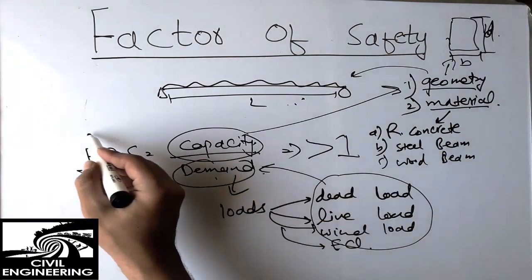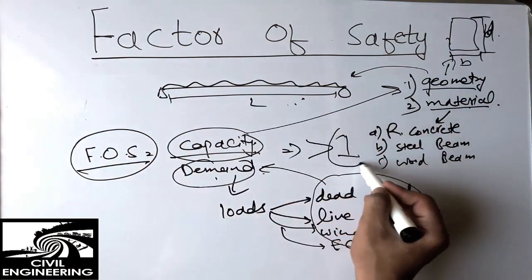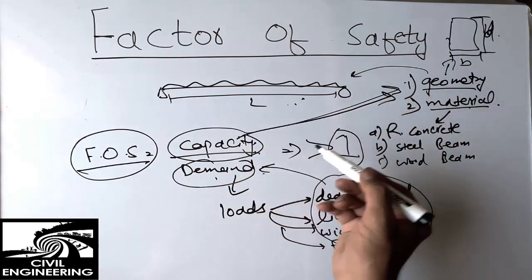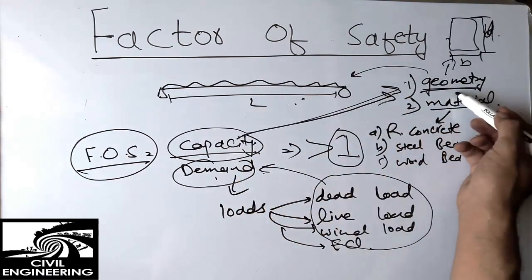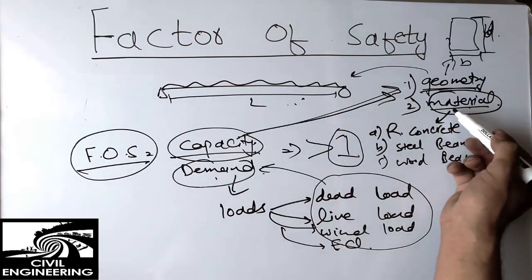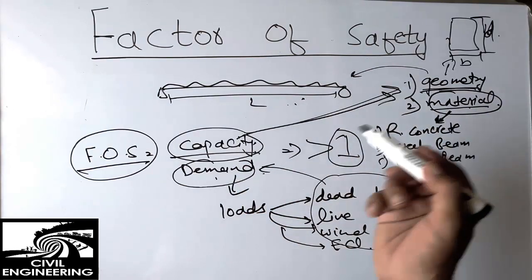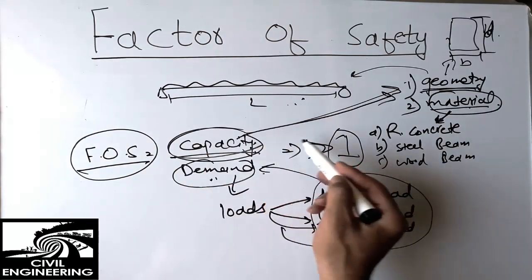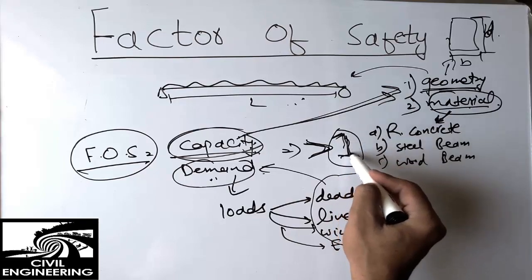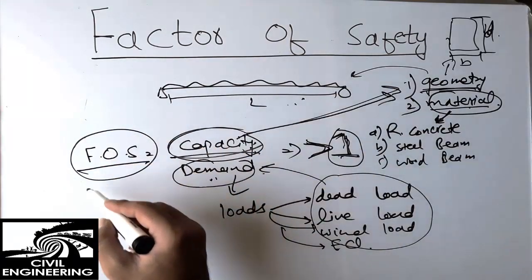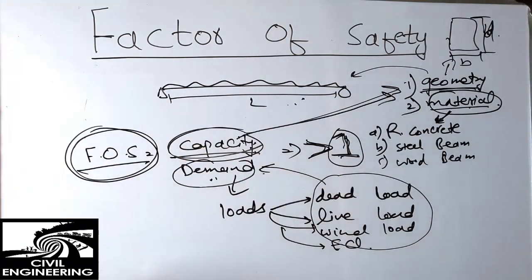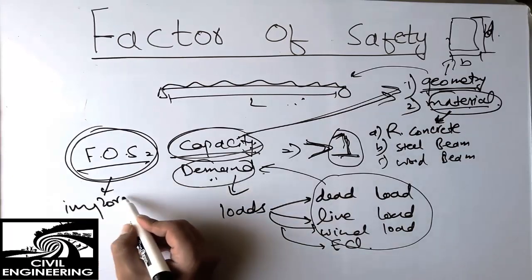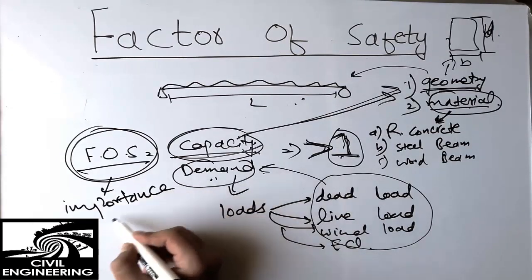How safe the structure is depends on the number you get. By increasing capacity — either by increasing the geometry of the beam or by using better quality material like high-strength concrete — the capacity becomes greater than the demand, giving a higher value in the numerator and thus a higher factor of safety. The factor of safety totally depends on the importance of the structure.